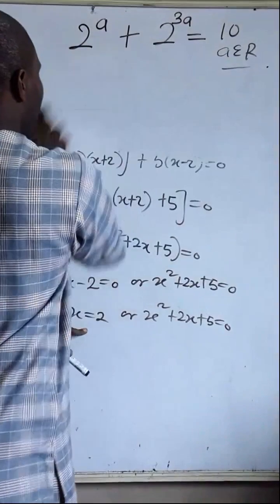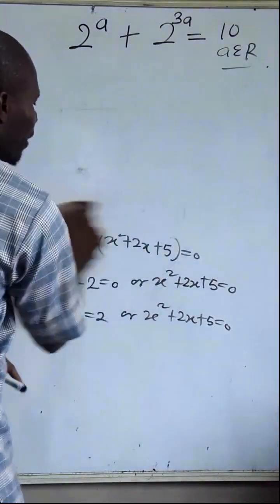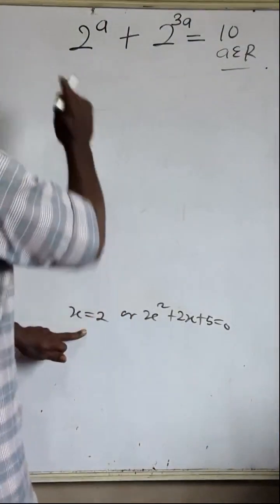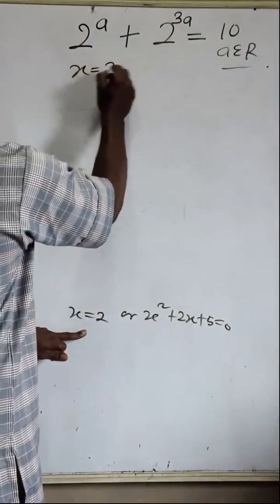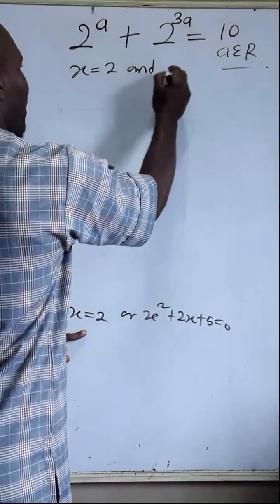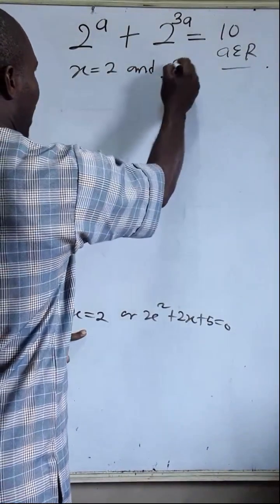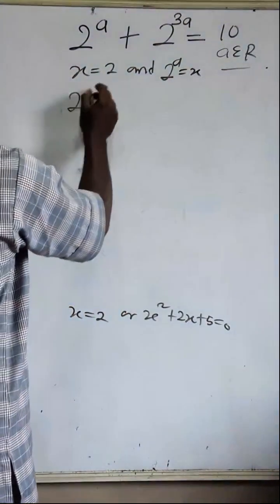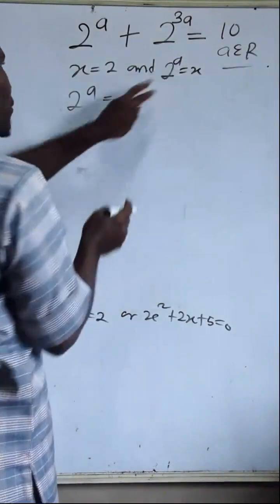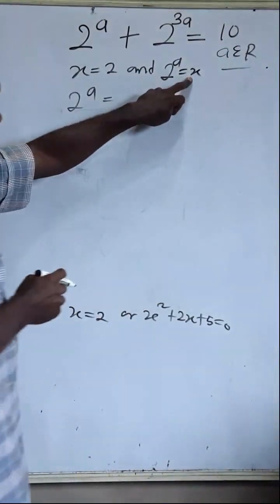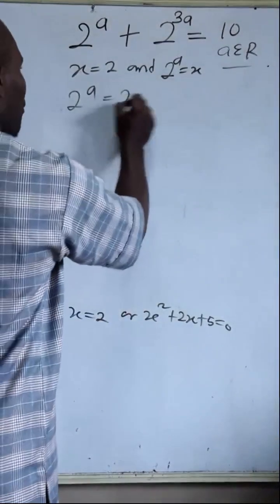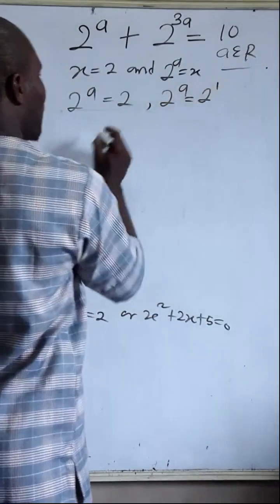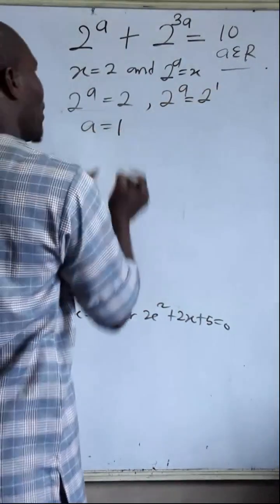Since the product equals zero, either x minus 2 = 0 or x squared + 2x + 5 = 0. So x = 2. Since 2 raised to the power a equals x, and x = 2, we have 2 raised to power a = 2 raised to power 1. Therefore a = 1. That is one value of a.